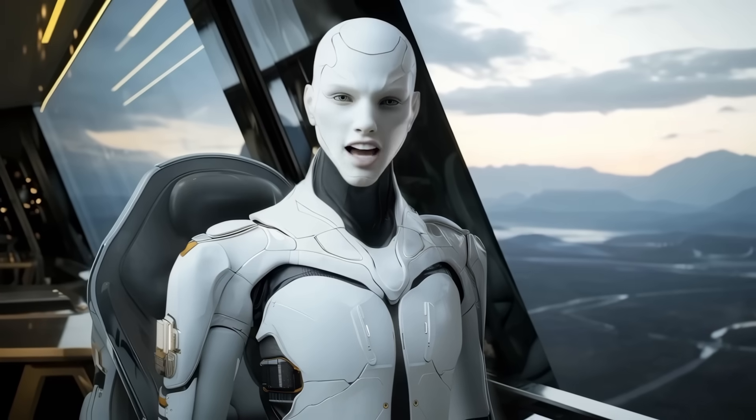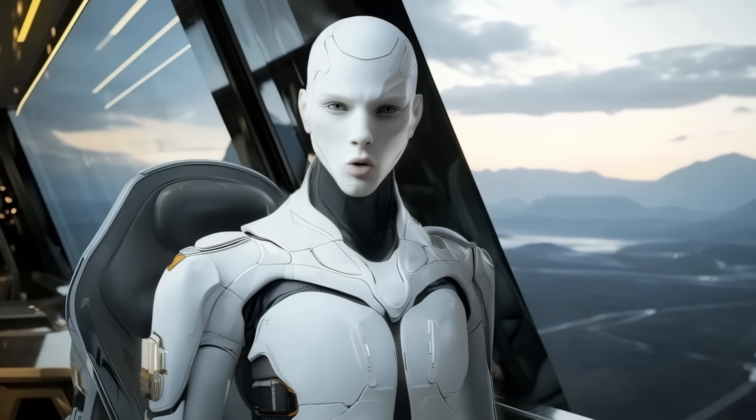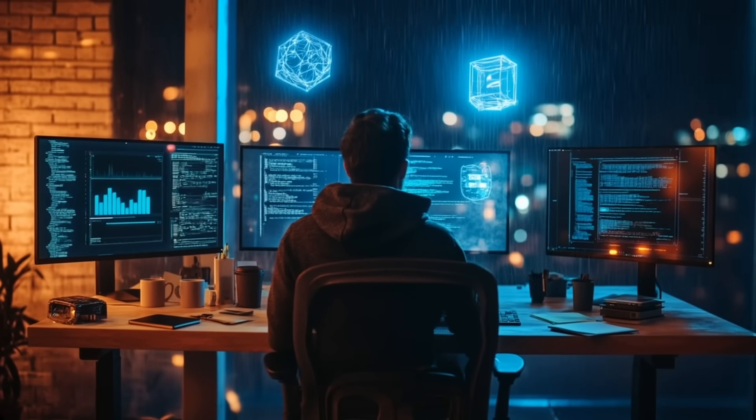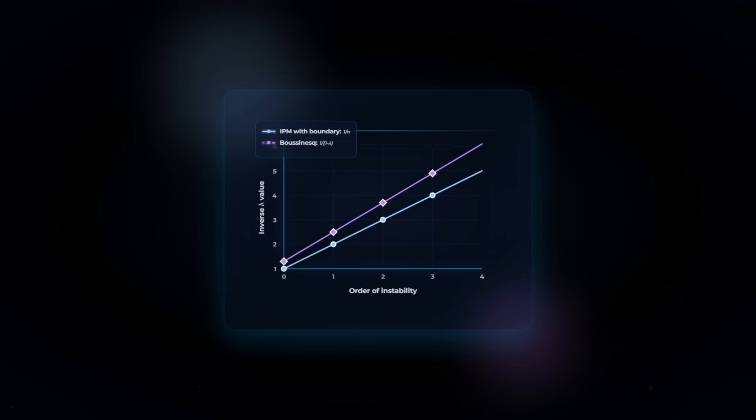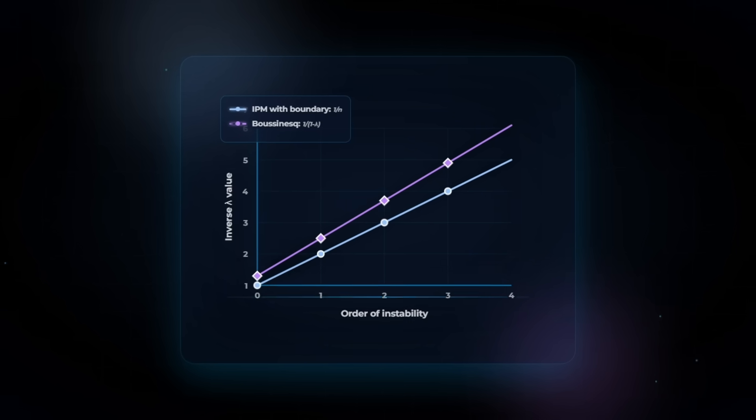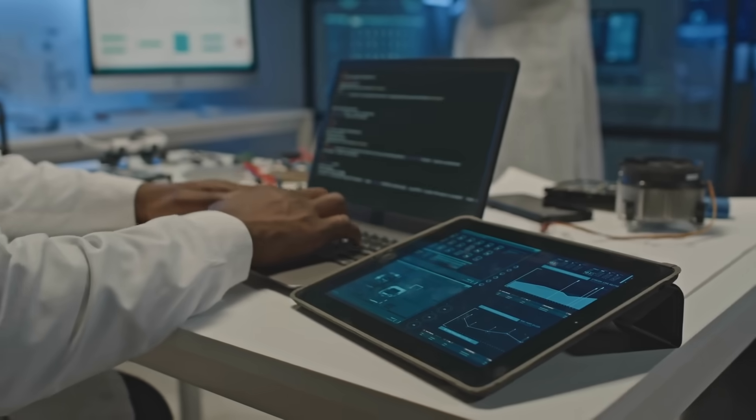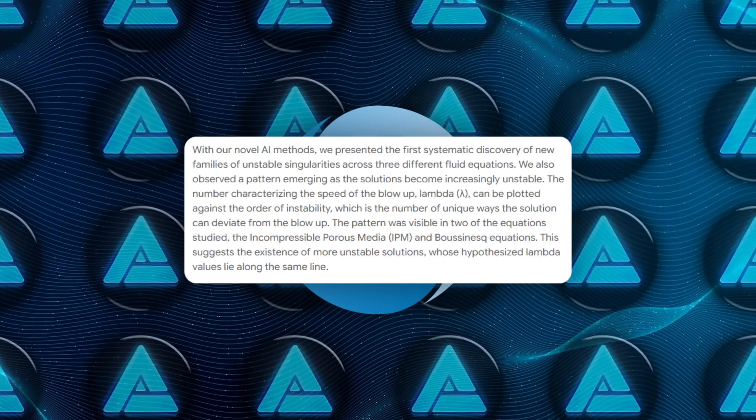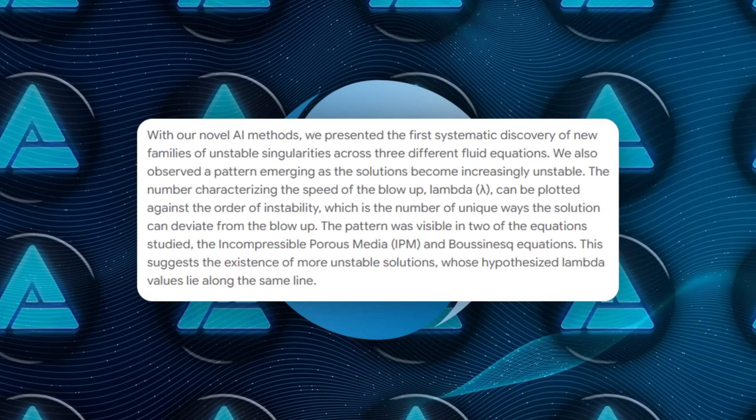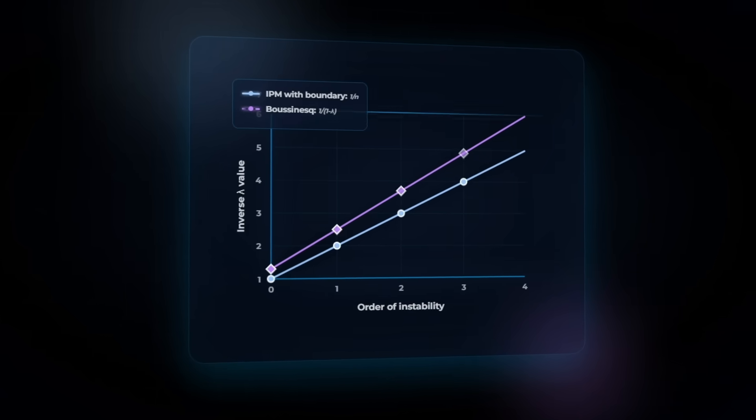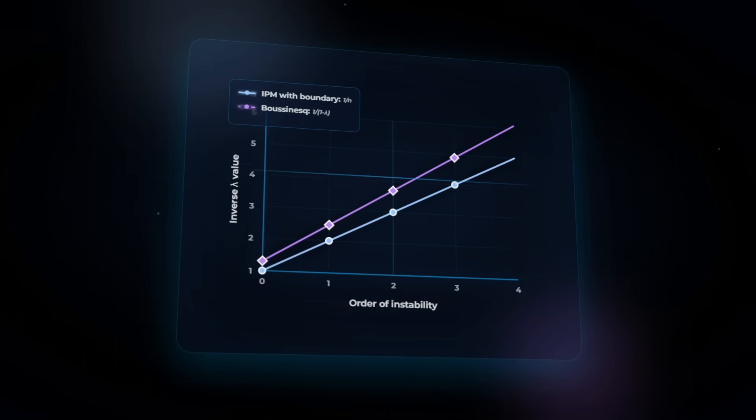Now, one of the most fascinating parts is how the AI uncovered patterns within these blow-ups. When fluids blow up in the equations, you can characterize how fast it happens using a number called lambda. DeepMind's system noticed that as the singularities became more unstable, there was this surprisingly clear pattern when you plotted lambda against the order of instability, the number of unique ways the solution could deviate from the blow-up. They saw this in the incompressible porous media equations, the Boussinesq equations, and, of course, the Navier-Stokes. That regularity suggests there might be a whole landscape of other singularities out there just waiting to be uncovered.